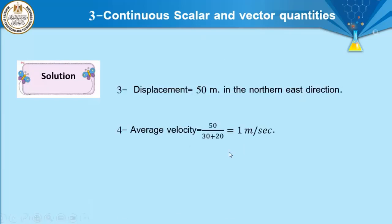Number four, average velocity: average velocity equals displacement divided by total time. Displacement equals 50 meters; total time equals 30 plus 20 equals 50 seconds. So velocity equals 50 over 50 equals 1 meter per second. Conclusion: speed equals 1.4 m/s and velocity equals 1 m/s, confirming that speed is greater than velocity.